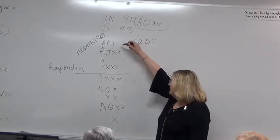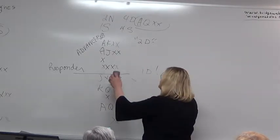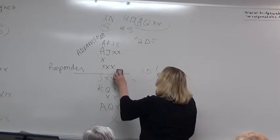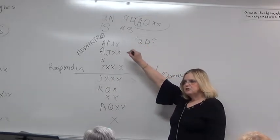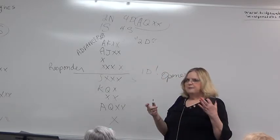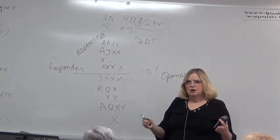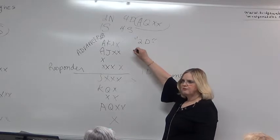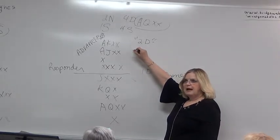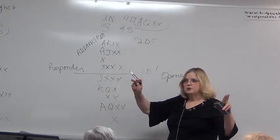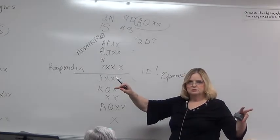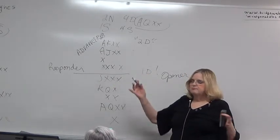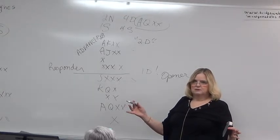And, consequently, here, if partner doesn't mean it, he shouldn't cuebid. If he has a suit, he shows it. If you have a preference, show it. This is no preference but points. And, I have support, not tolerance, support for both majors. You've got one major, bid it.